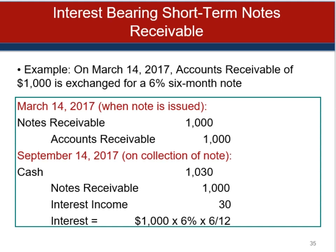Here's an example of a note with a stated interest rate of 6%. Accounts receivable of $1,000 is given up and a note receivable of $1,000 is received, with a promised 6% rate of return. The note was issued on March 14th, and six months later payment was received. The payment records the note receivable of $1,000 plus interest: $1,000 at 6% is $60, but it's only been outstanding half a year, so interest income is $30. Total cash received is $1,030, with $30 recorded as interest income separate from the accounts receivable derived from sales.